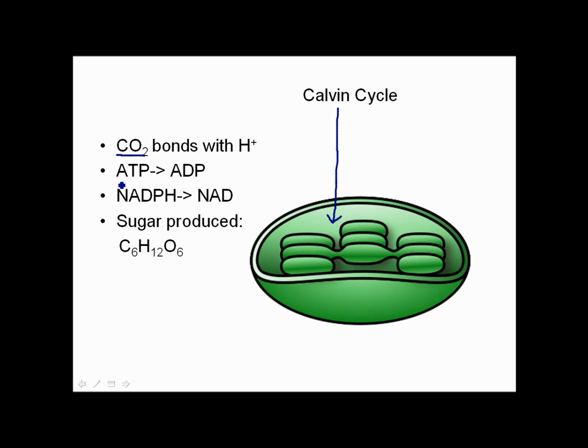This takes energy and so the energy comes from the ATP. So the ATP gets converted to ADP, from adenosine triphosphate to adenosine diphosphate. Also the NADPH gets reduced to NAD. Again, we'll look at what these chemicals are in more detail in a future video. But the final end product is sugar, glucose, which has the familiar formula C6H12O6.